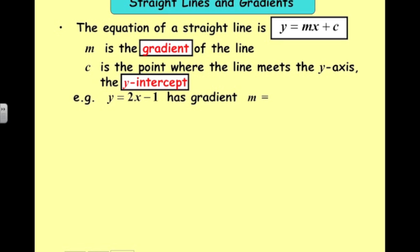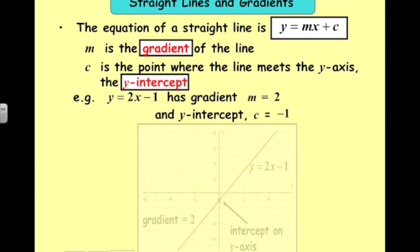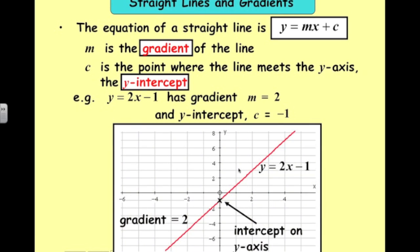So if we have y equals 2x minus 1, the gradient is 2. That's the number in front of the x, the coefficient of the x. And the y-intercept sitting on the end there is minus 1. So here's that line, going through minus 1, and it has a gradient of 2.